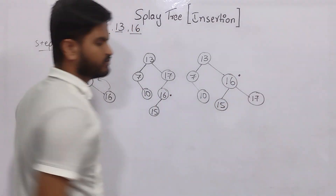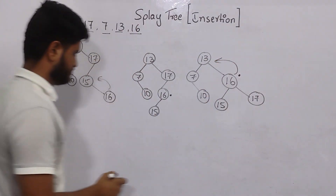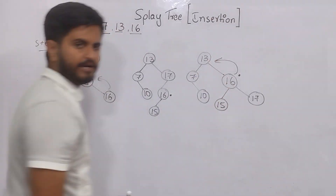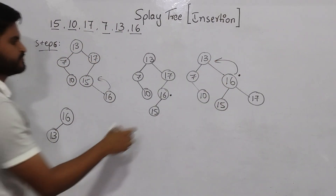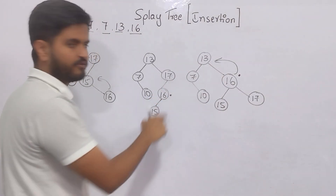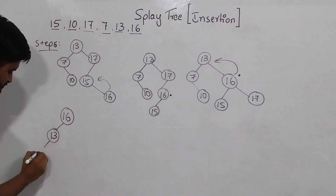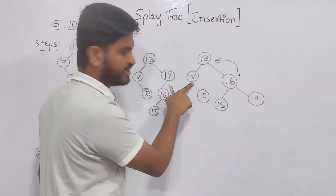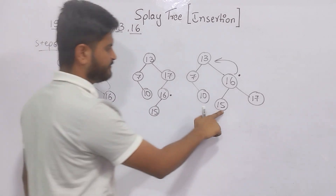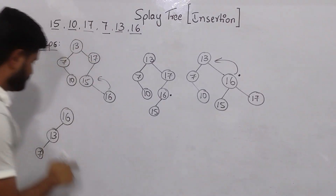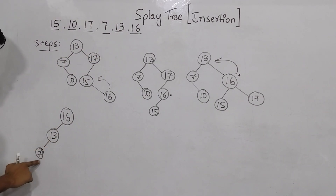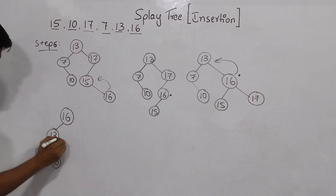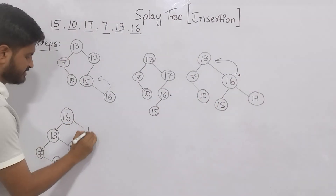Now my inserted node 16 is here and I exchange it with 13. 16 comes to root. Upside to downside, left to right: 13 is less than 16, so it goes left. Next is 7 — 7 is less than 16 and less than 13, so 7 goes here. Then 10, 15, and 17 are at the same level — left to right: 10 is less than 16, less than 13, but greater than 7, so 10 comes here. 15 is less than 16 but greater than 13. 17 is greater than 16.